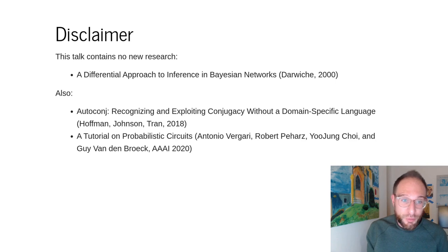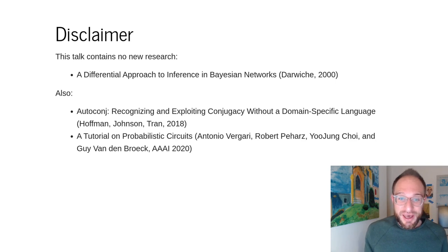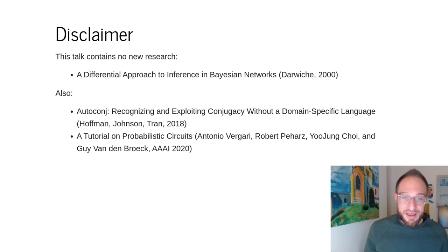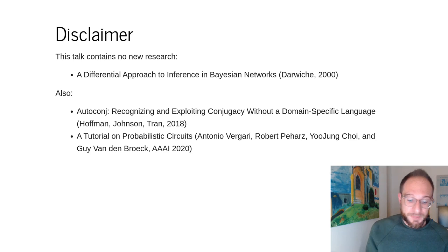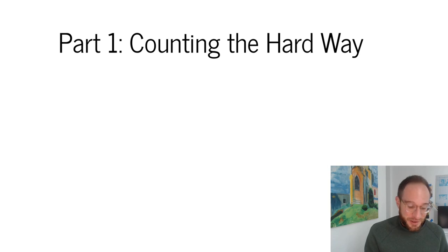I also want to note that work on autoconj from 2018 and work on probabilistic circuits were very helpful in understanding the limits of these methods. If you're interested in some of the more advanced ideas in this talk, check those out. In practice, what we're going to do today is a slow didactic walkthrough of what differential inference means and how to apply it in modern deep learning frameworks, starting with some extremely elementary problems. It may seem too elementary for this audience, but stick with me and we'll get to some cool problems at the end.